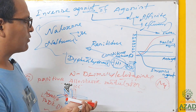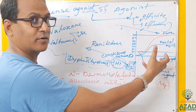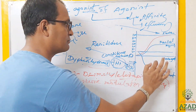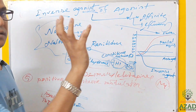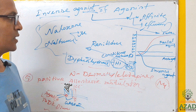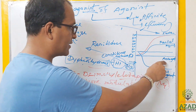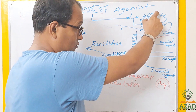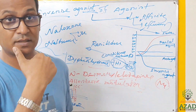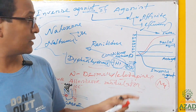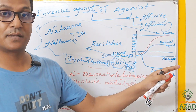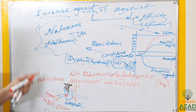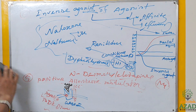So, agonist is not always positive activity. An inverse agonist must have the ability to change the conformation of the receptor and produce an effect. An antagonist, by contrast, has affinity but no efficacy — no activity at all. That is the key distinction.